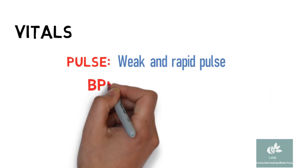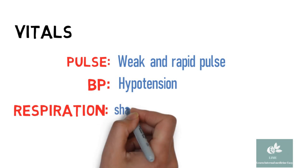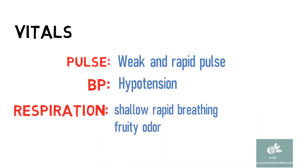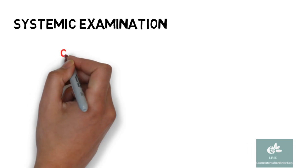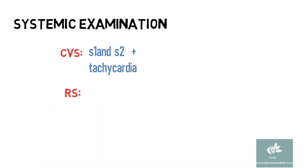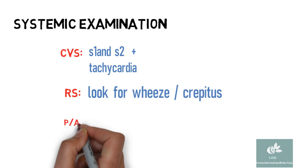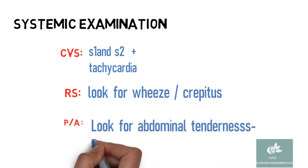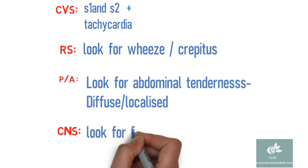Vital monitoring is very important. Patient may have a weak and rapid pulse, usually hypotension, tachypnea with rapid and shallow breathing, and a fruity odor. Patient may have hypothermia or temperature may be within normal limits. In cardiovascular system, patient may have tachycardia. In respiratory system, look for signs of consolidation and crepitations, which may develop during excessive fluid correction. On per abdomen, look for abdominal tenderness. In CNS examination, look for any focal neurological deficit, because CVA can precipitate as DKA.